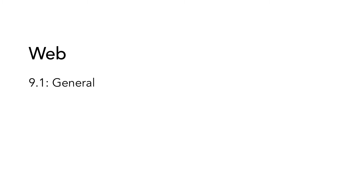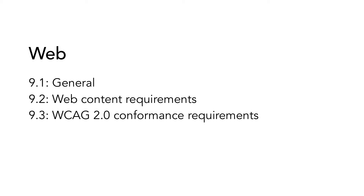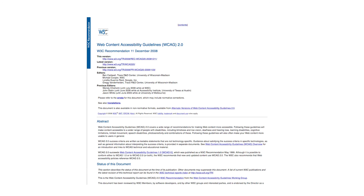There are three subsections in this chapter. The first one is general. The second one covers web content requirements. And the third one is Web Content Accessibility Guidelines or WCAG 2.0, the conformance requirements. Section 9.1 does not include any requirements but rather defines the scope of chapter 9, describing what types of interfaces are covered and giving instructions on how to use the chapter. The standard also describes how the EN standard refers to WCAG 2.0 and how WCAG is to be used to fulfill the requirements in EN 301 549. Since WCAG is such a central part of this chapter, we will start this video with describing WCAG.